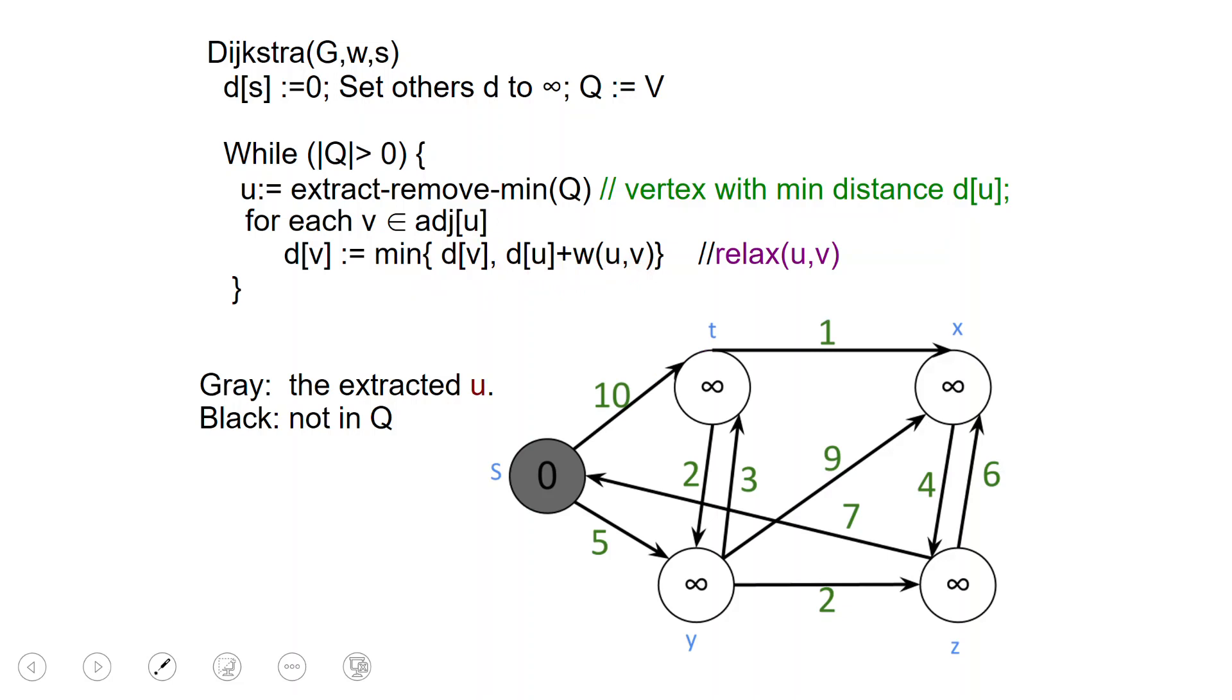Here is an example. So at the beginning all the nodes are in Q, so white and gray are in the queue. Gray is what we extract from the queue and the black nodes will be outside of the queue. So at the beginning, we extract S and then we're going to relax the edges leaving S. That's these two edges.